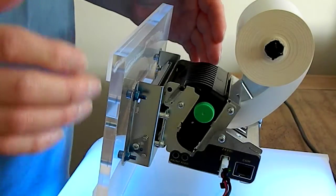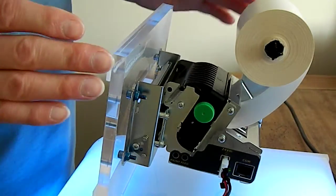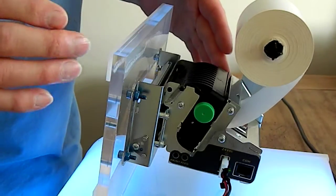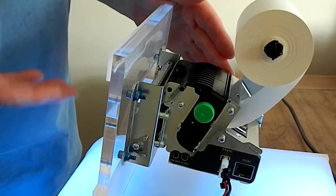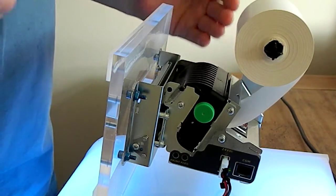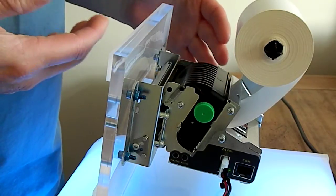This is a Custom Engineering TG2460 with some clever paper roll protection for use where you don't want to use a presenter, but the printer does need to be used by the public.